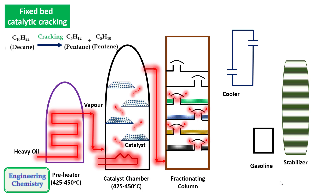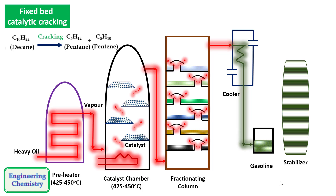The fractionating column separates the upper, middle, and lower layers. The suitable layer of gasoline is sent to a cooler where it gets condensed into liquid gasoline. This gasoline still contains some dissolved gases, so it is sent to a stabilizer where it is heated at a suitable temperature. The gases are removed from the top and pure gasoline is collected at the bottom. The octane number of this gasoline is around 80 to 85.